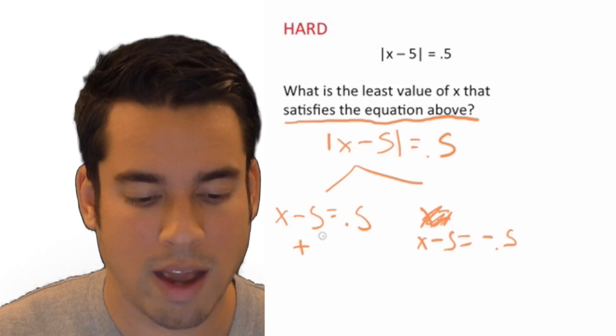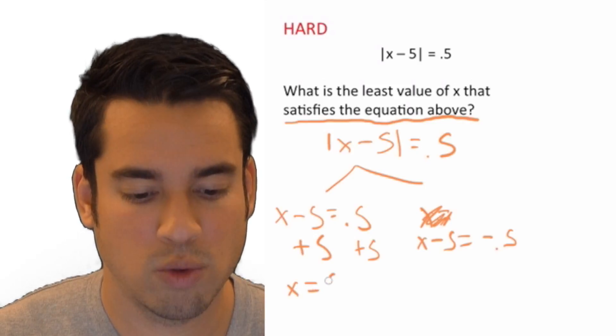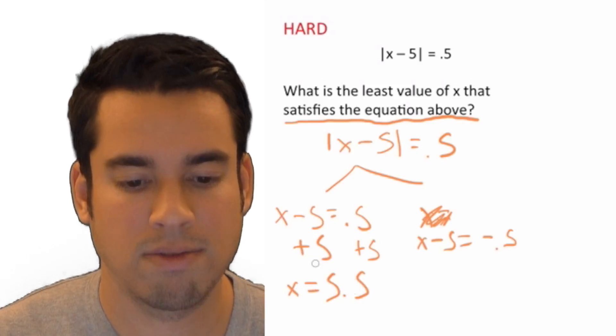So this one we're going to add 5 to both sides. And we get x equals 5.5. Alright.